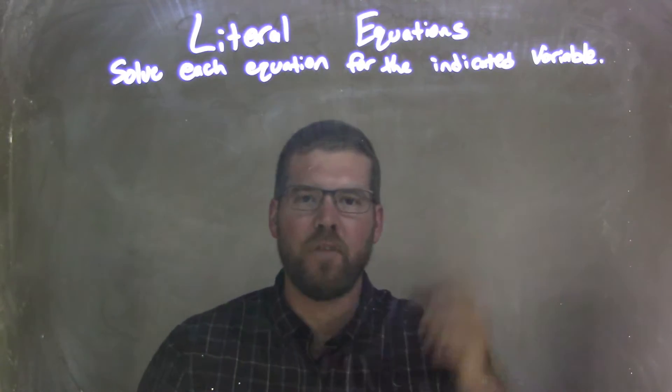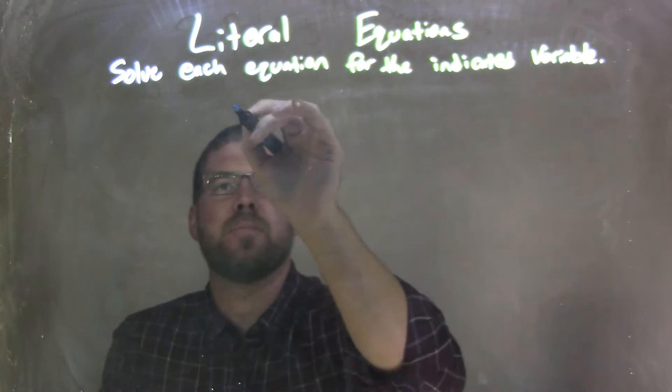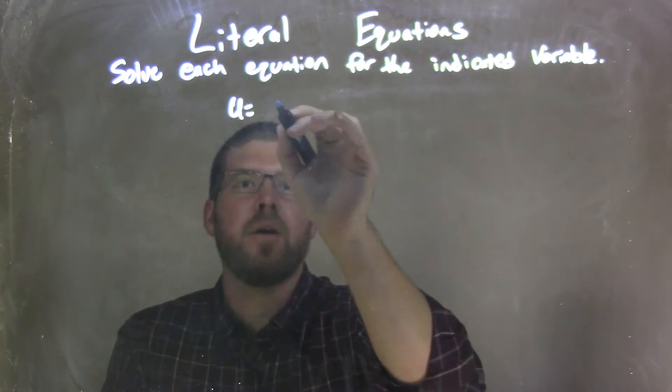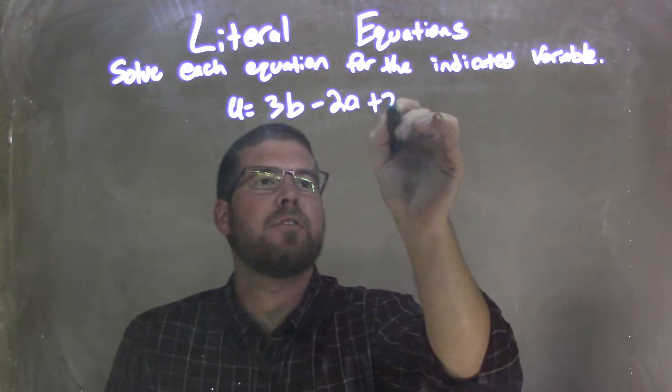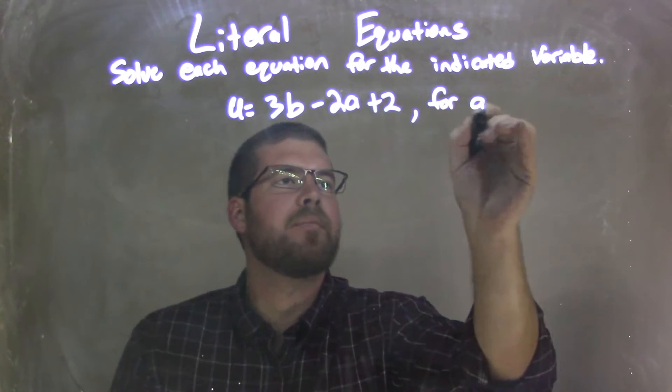We're going to solve each equation for the indicated variable. So if I was given this equation, u equals 3b minus 2a plus 2, we're going to solve that for a.